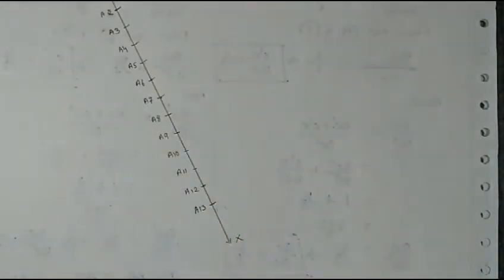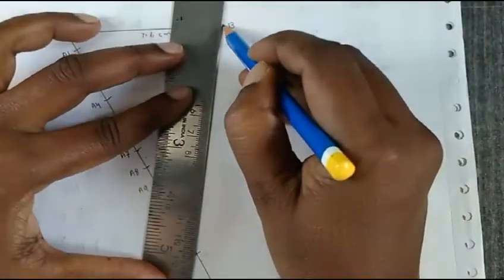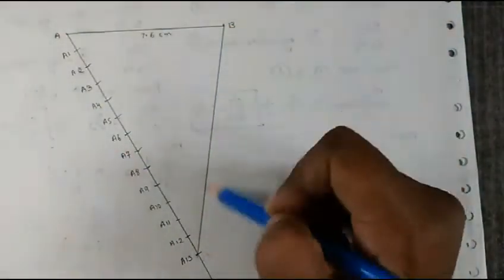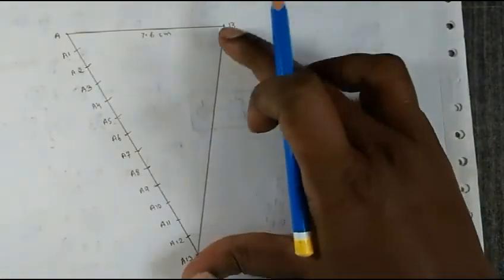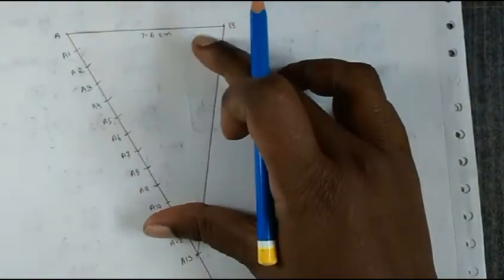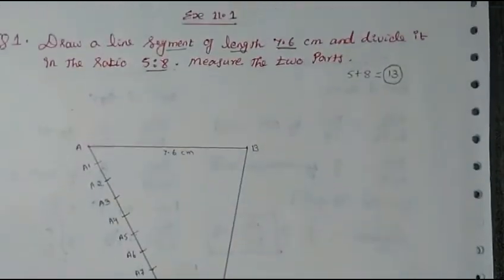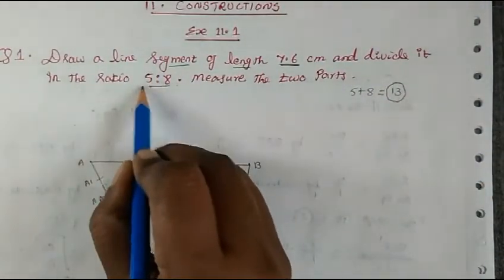Now what we will do: join the last part A13 with B. The last part has been joined to B. For this line, we have to draw a parallel line.